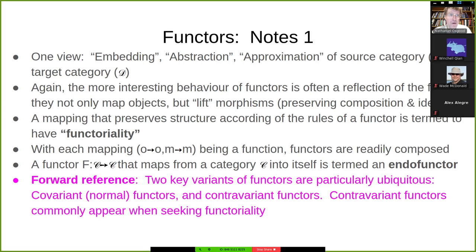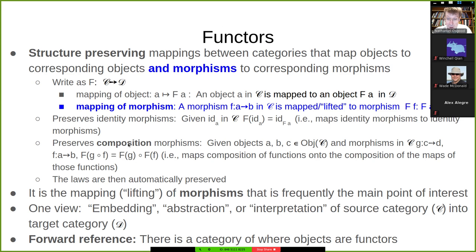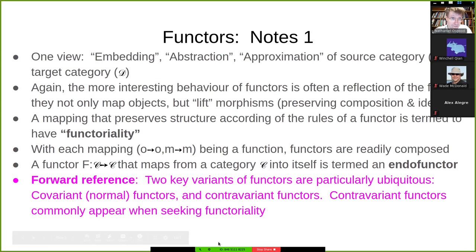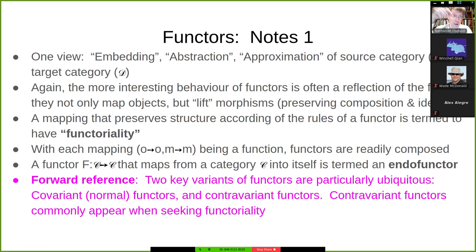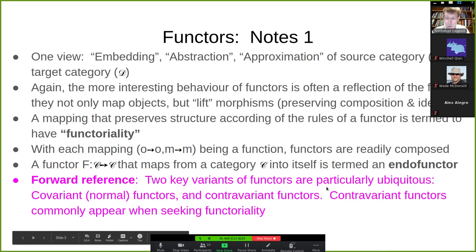The identity functor maps a category C back to C — it's an endo functor. It maps objects to themselves: A maps to A, B maps to B, C maps to C. Each morphism between A and B, that function mapping morphisms to morphisms between those pairs of objects — the identity functor maps morphism f to f. Composing the identity with any other functor G will get back G. So the identity functor plays a big role in this idea that there's a category in which the objects are categories and the morphisms are functors.